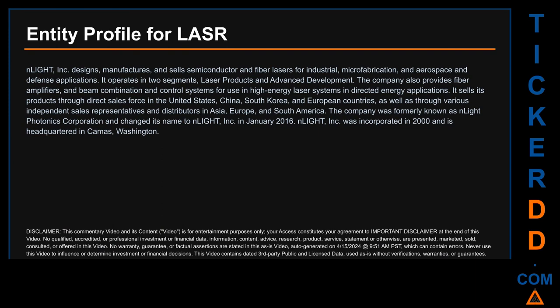nLIGHT sells its products through a direct sales force in the United States, China, South Korea, and European countries, as well as through various independent sales representatives and distributors in Asia, Europe, and South America. The company was formerly known as nLIGHT Photonics Corporation and changed its name to nLIGHT Inc in January 2016. nLIGHT Inc was incorporated in 2000 and is headquartered in Camas, Washington.